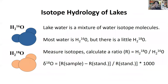Now we'll talk briefly about the isotope hydrology of lakes. Lakes are filled with water, and lake water is therefore a mixture of various water isotope molecules. The two most common are H2-16O and H2-18O. These two water isotope molecules behave a little bit differently during phase changes in the water cycle, which is ultimately related to the mass difference of those two molecules.